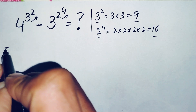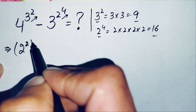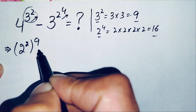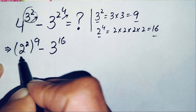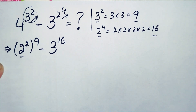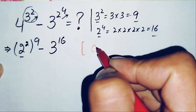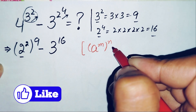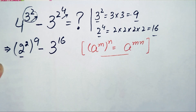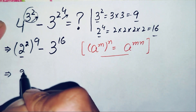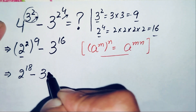So the problem becomes: 4, which we can write as 2 raised to power 2, whole raised to power 9, minus 3 raised to power 16. Now we will use the exponent property: a raised to power m, whole raised to power n equals a raised to power m times n. Using this property, the first term becomes 2 raised to power 2 times 9, which is 2 raised to power 18, minus 3 raised to power 16.